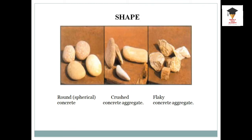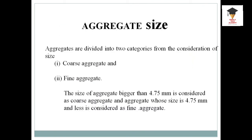Aggregates have major shapes: round or spherical shape, and crushed and flaky. Next one is aggregate size — aggregates are divided into two categories: coarse and fine. Those which pass through a 4.75 mm sieve are called fine aggregates and those which are retained are called coarse aggregates.